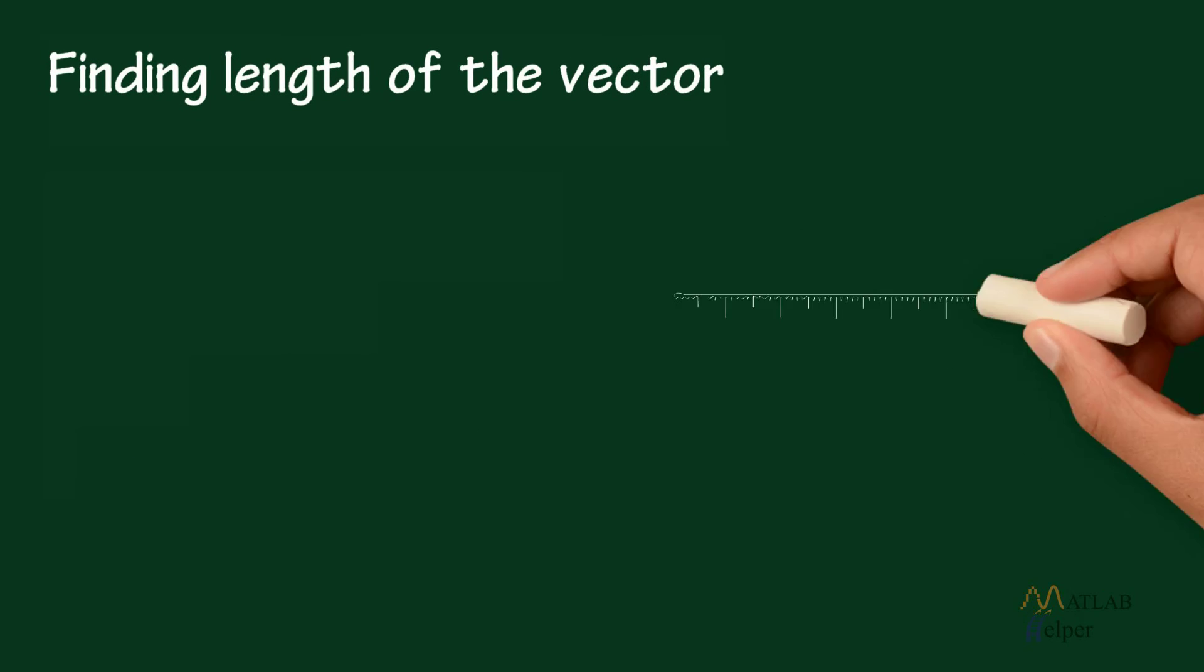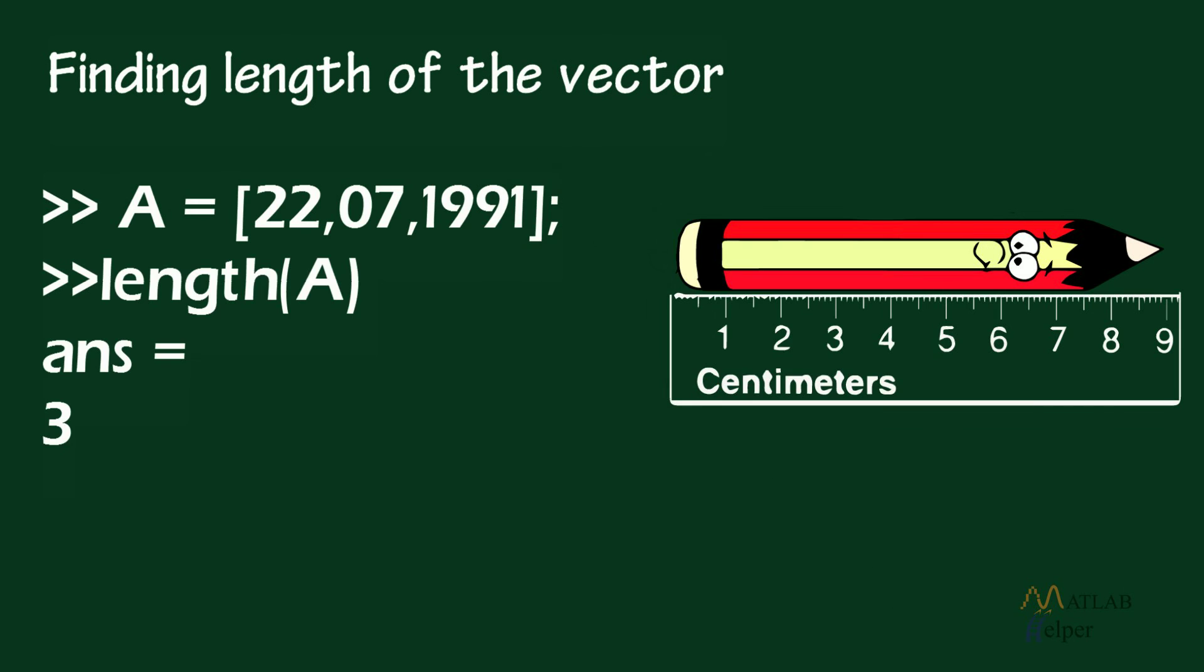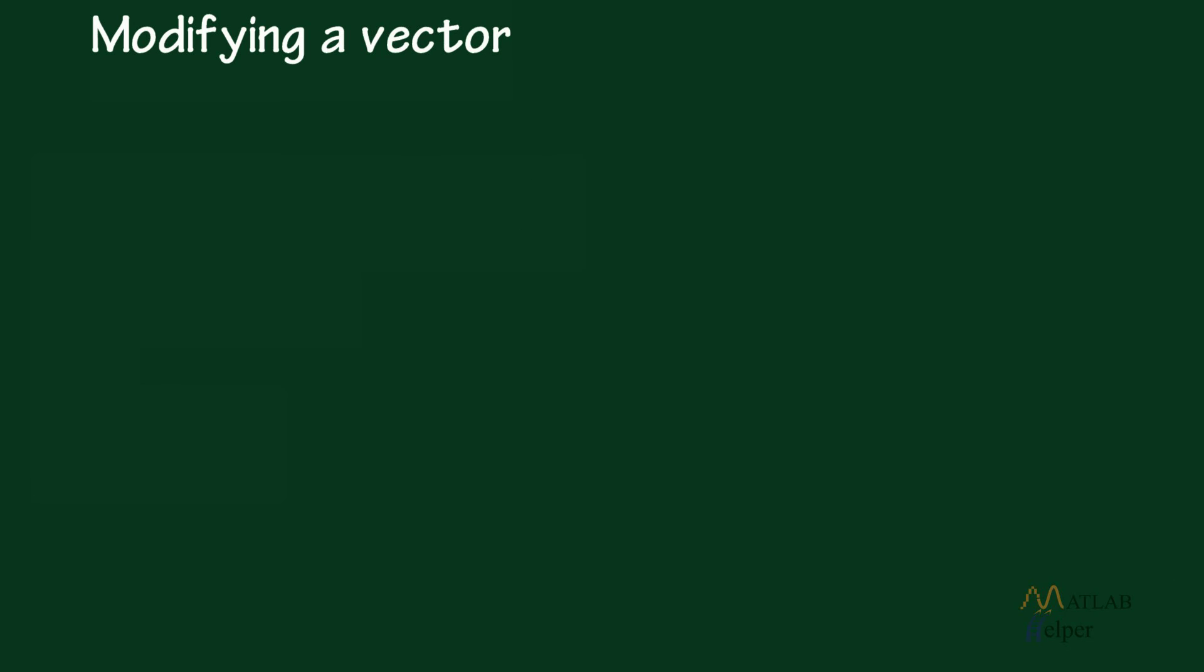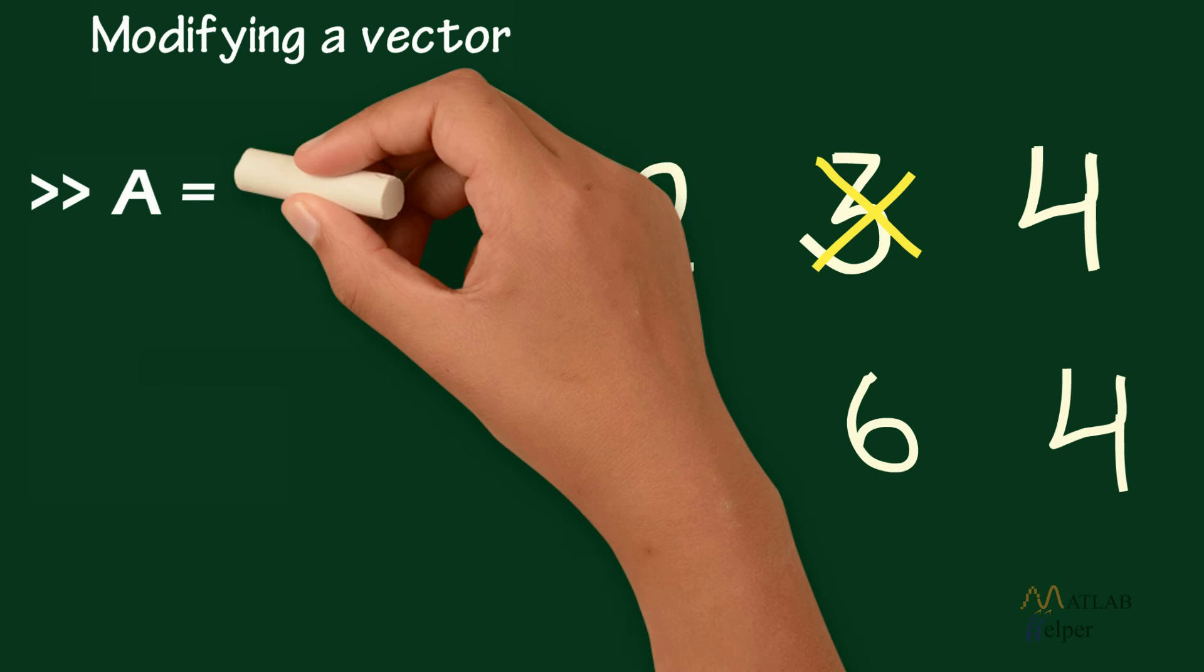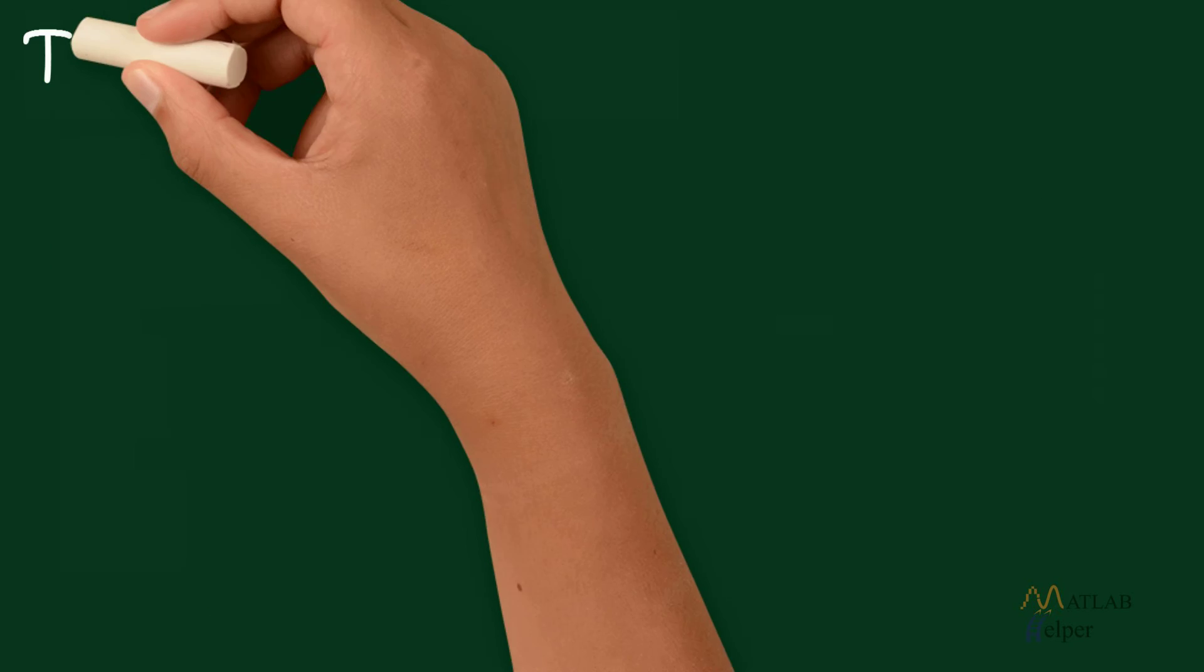Finding length of the vector: the following command lists the number of elements currently held in a vector. Modifying a vector: elements of the vector can be modified by directly accessing the location and replacing the existing value with a new one.